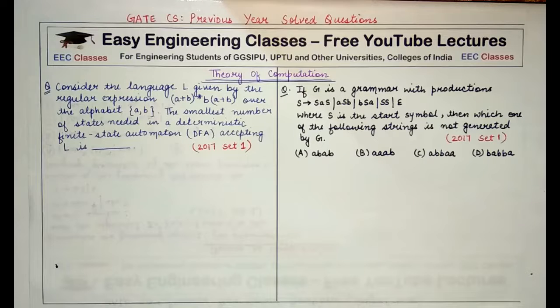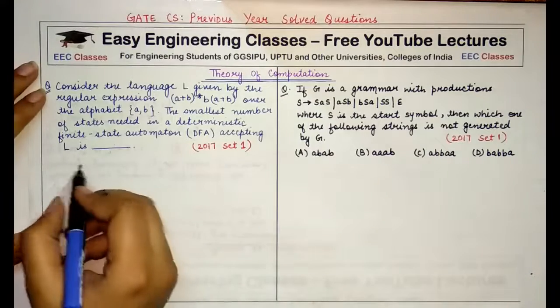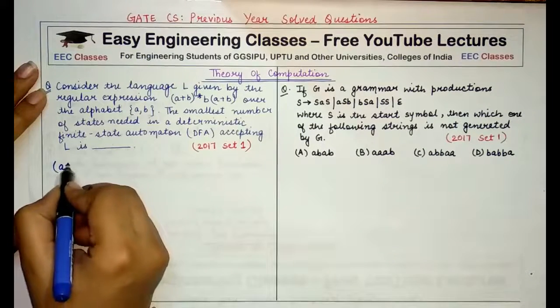Today we are solving two questions on theory of computation subject and these questions appeared in GATE 2017 paper. The first question reads as: consider the language L given by the regular expression (a+b)* followed by b and followed by (a+b) over the alphabet {a,b}. The smallest number of states needed in the deterministic finite automata accepting L is.